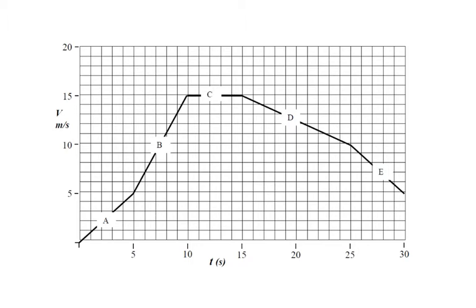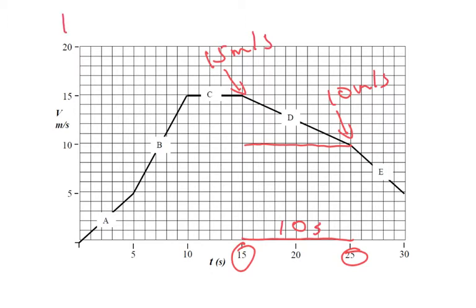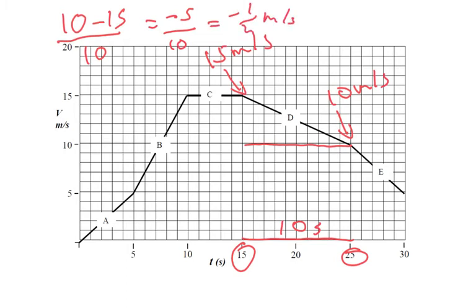For section D, the time taken is 10 seconds (from 15 to 25). The final velocity is 10 m/s and the initial velocity is 15 m/s. So 10 minus 15 divided by 10 gives minus 5 divided by 10, which is minus 0.5 meters per second squared — this is a deceleration. For every second, velocity decreases by 0.5 m/s.